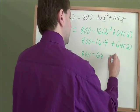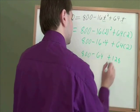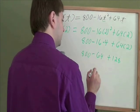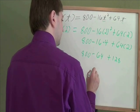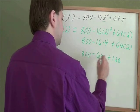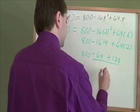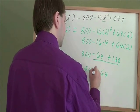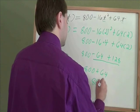64 times 2, that ends up being 128. Then 800 minus 64 plus 128. Well, turns out that 128 minus 64, that'll just be a positive 64. And then 800 plus 64 is 864.